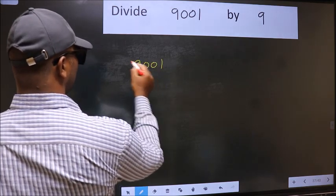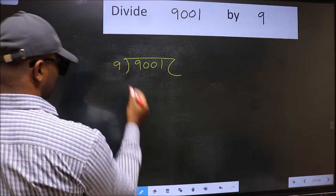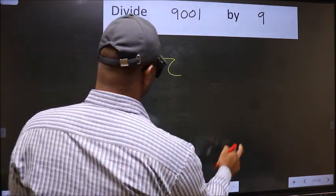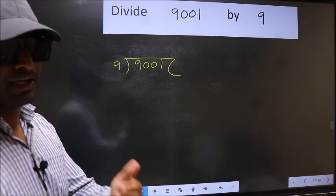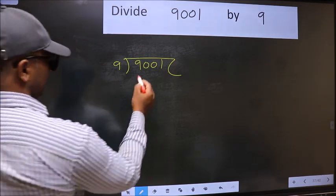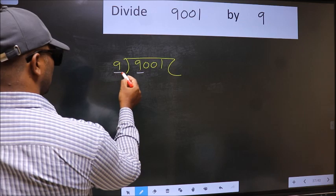9001 and 9 here. This is your step 1. Next, here we have 9, here also 9.